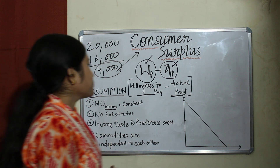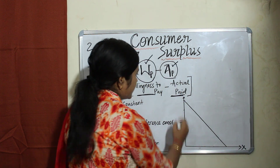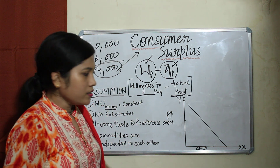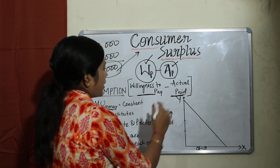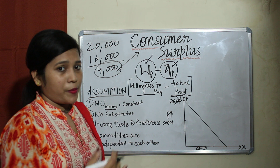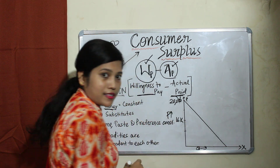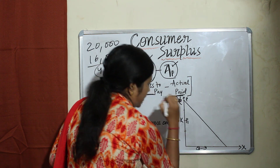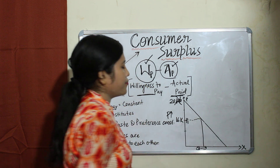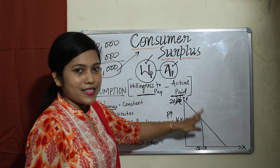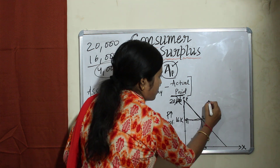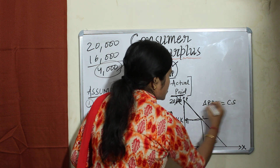So what is the graphical explanation? We take quantity on the x-axis and price on the y-axis. We thought to pay 20,000 rupees — that is P. What we actually pay is 16,000 rupees — that is P1, where P1 is less than P. At 16,000 rupees we purchase the phone. The vacant area — triangle P, P1, and L — is your consumer surplus.